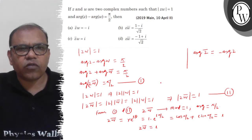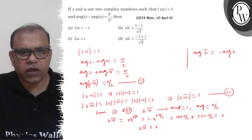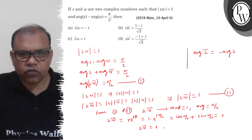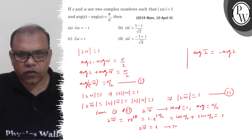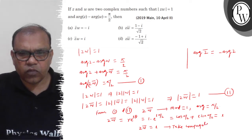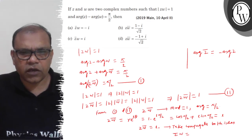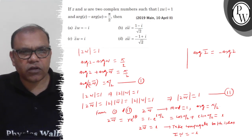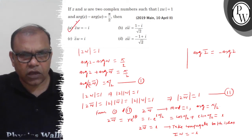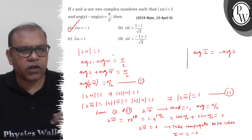Now, z·omega-bar equals iota, but no option is in this form directly. So take conjugate on both sides. The left side becomes z-bar·omega, and the right side becomes the conjugate of iota, which is minus iota. So z-bar·omega equals minus iota — this is Option A. I hope you understood well, thank you.